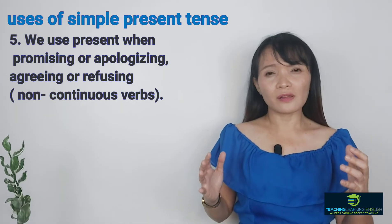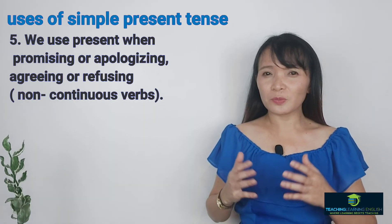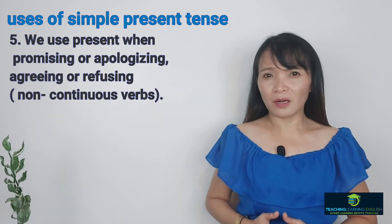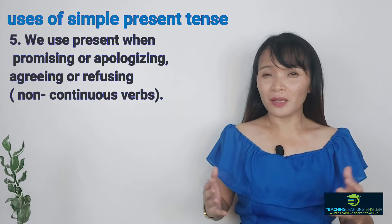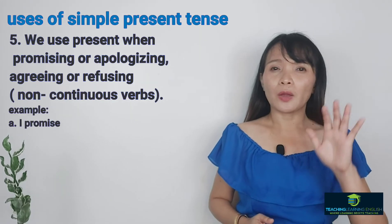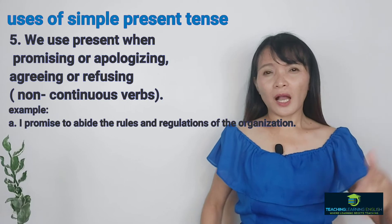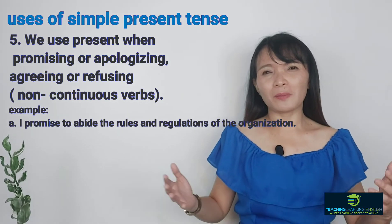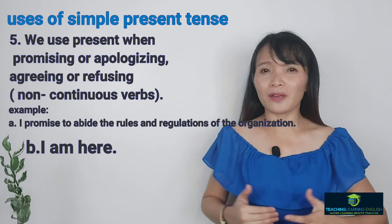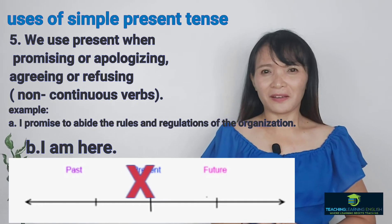We use Simple Present Tense when we promise, apologize, agree, or refuse. These are non-continuous verbs, meaning you don't use the verb with -ing. You only use the Simple Present Tense to express that an action is happening or is not happening now. For example: I promise to abide by all the rules and regulations — you don't say I'm promising to abide. I apologize for what happened — you don't say I'm apologizing. You say I am here or I am not here — the verb is 'am.' We can illustrate this on the timeline.